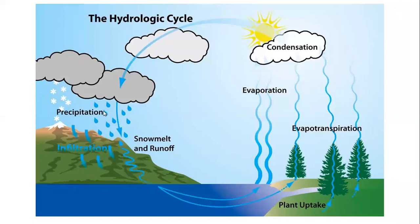Some amount of water moves further in a downward direction, joins the aquifers, and after that comes out from suitable locations through springs, again joining the water bodies. Some amount of water also gets absorbed by various trees, grasses, and crops.